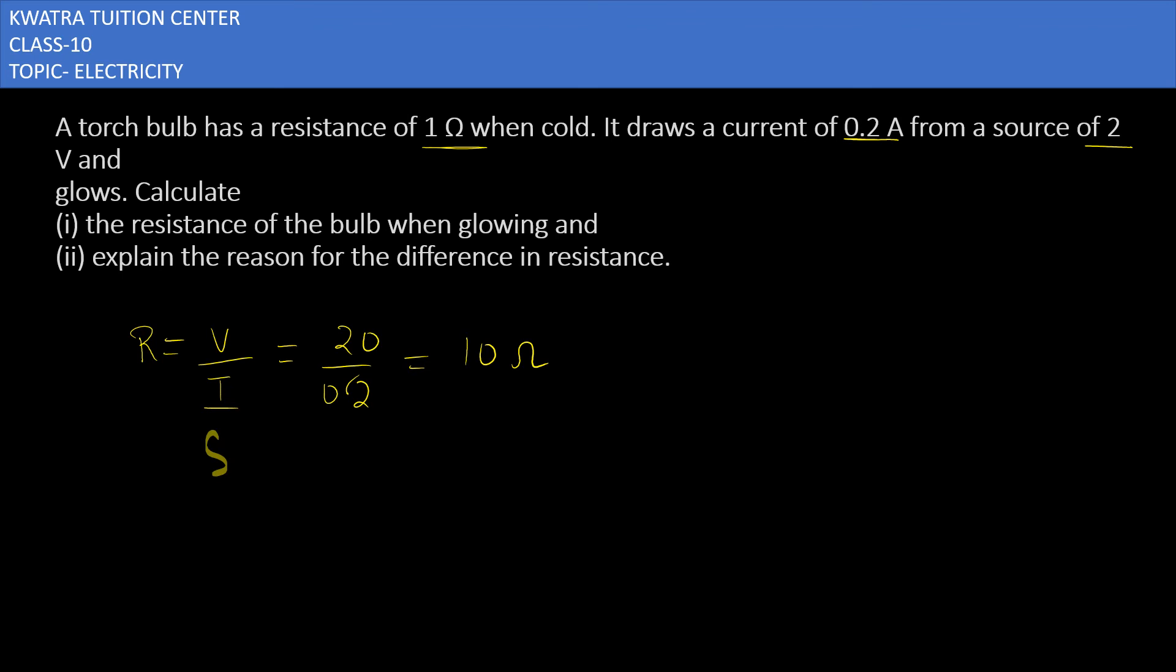Because the temperature is changing here. When the temperature is changing, the resistance will also change. If the temperature increases, then your resistance will also increase. This is the relationship between temperature and resistance. This is your answer for the second one. Now we'll be moving to the third question.